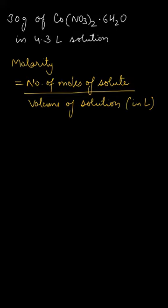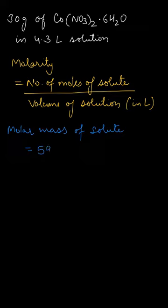For that we need to calculate the molar mass of the solute. The molar mass of the solute would be given by: firstly 59, which is the atomic mass of cobalt, plus we are having two moles of NO₃, so we multiply this by 2.